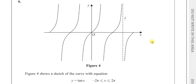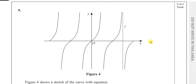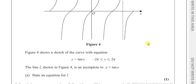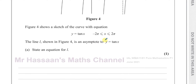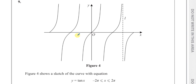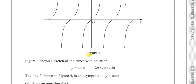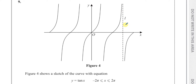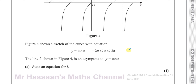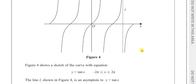It says figure 4 shows a sketch of the curve with equation y equals tan x, between minus 2 pi and 2 pi. The line L shown in figure 4 is an asymptote to y equals tan x — stating the equation for L.